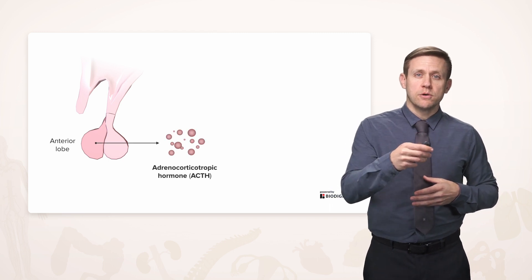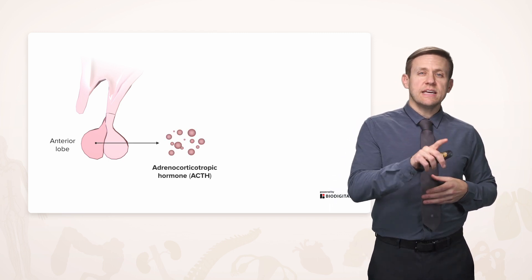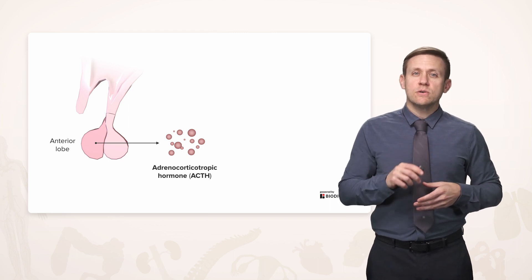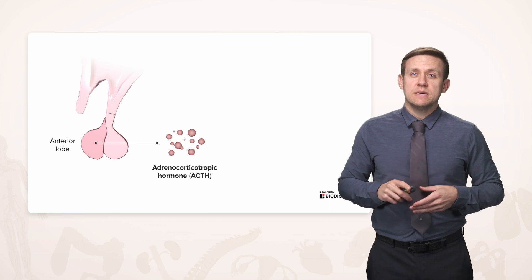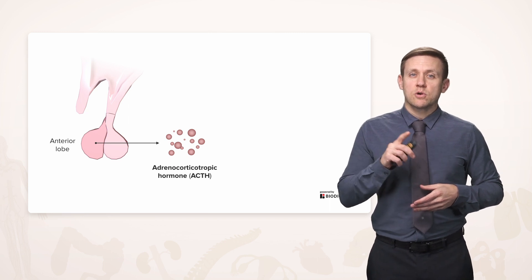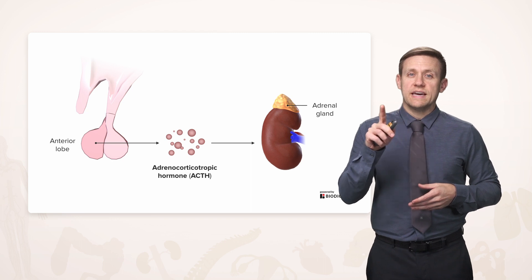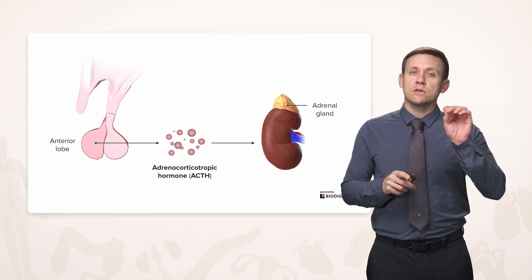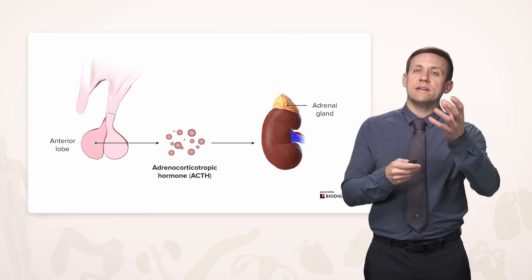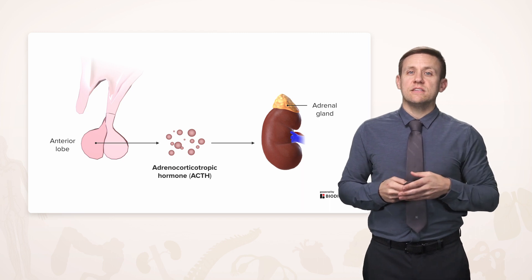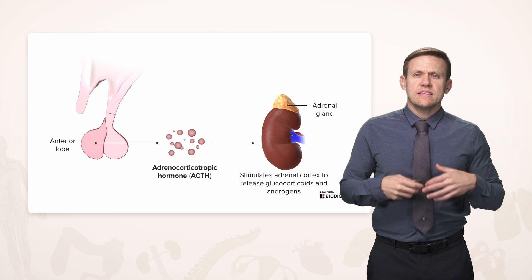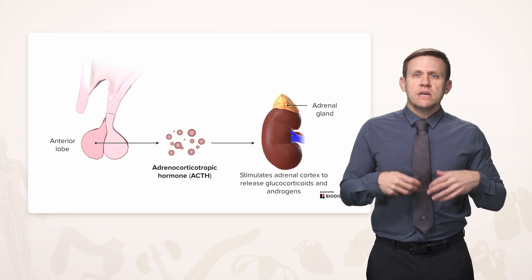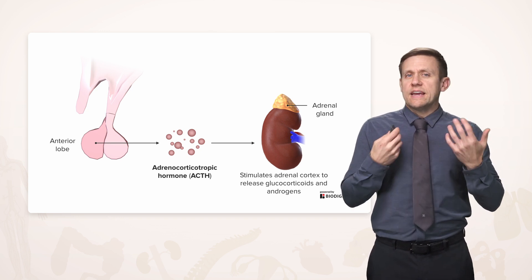Adrenocorticotropic hormone, or ACTH, actually tells you what it's doing, even though it seems like a mouthful. Adrenocorticotropic means it has a tropism or tendency to go towards the adrenal cortex. So ACTH is acting on the adrenal cortex, and that's going to stimulate things like glucocorticoids and androgens.